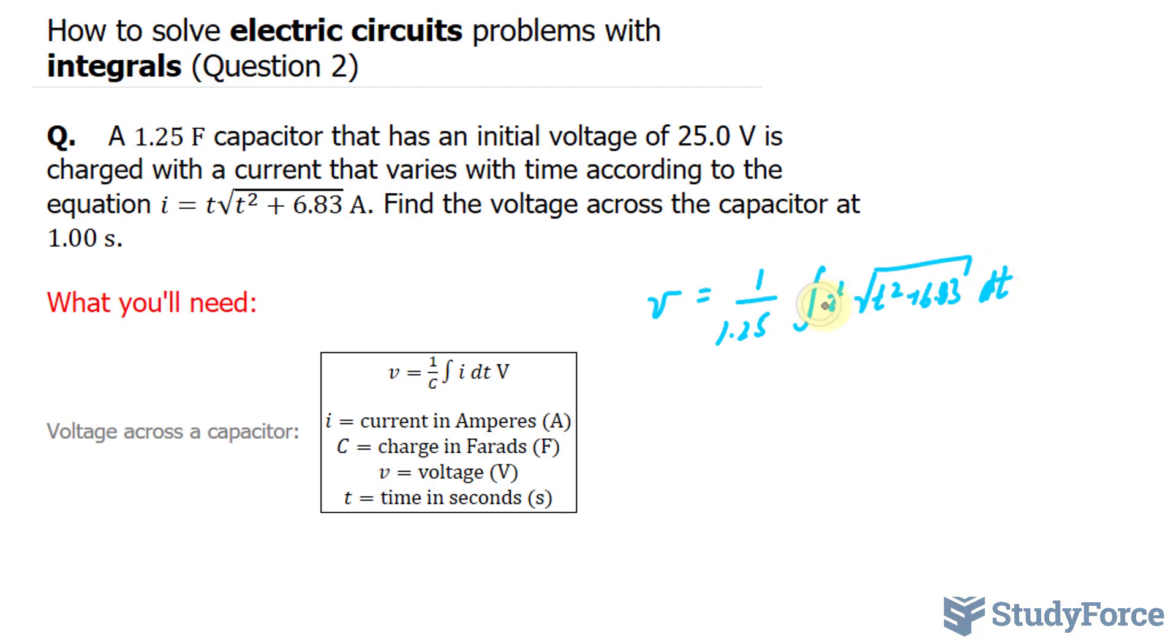To integrate this function isn't a one-step process, in fact you have to use u substitution. Here's what I mean. I'm going to substitute u with this expression, t squared plus 6.83, and differentiate u implicitly, like this. u is equal to t squared plus 6.83.